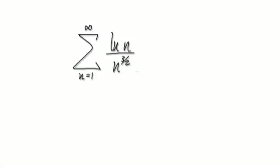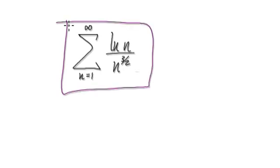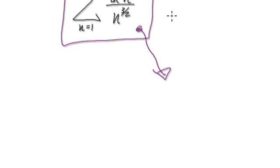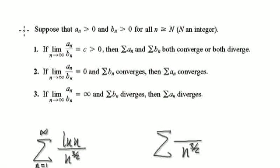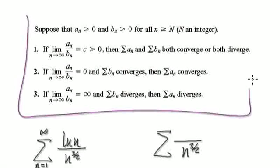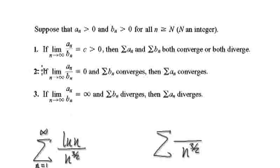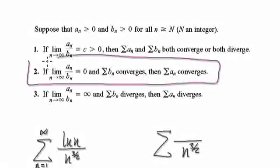Let's give you guys another example of a limit comparison test. We are trying to establish if this series will converge or if it will diverge. The way we're going to do this is to use this theorem, which we've seen many times in the past. For this example, we would need number 2, where you find the limit of AN over BN.